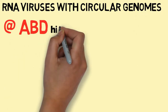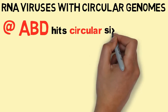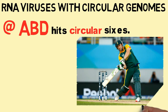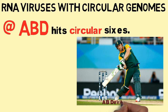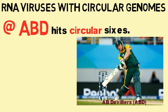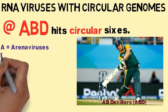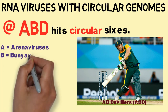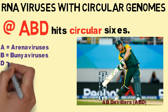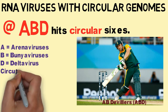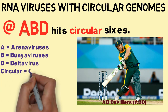Now let's move to RNA viruses with circular genomes. The mnemonic is 'ABD hits circular sixes,' where A is for Arenaviruses, B is for Bunyaviruses, and D is for Delta viruses — all having circular genomes.